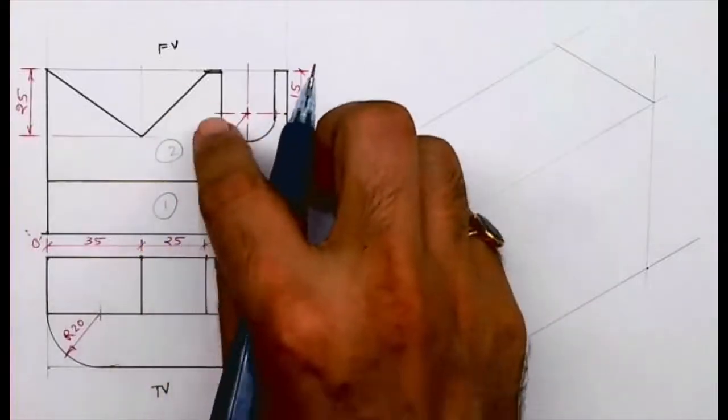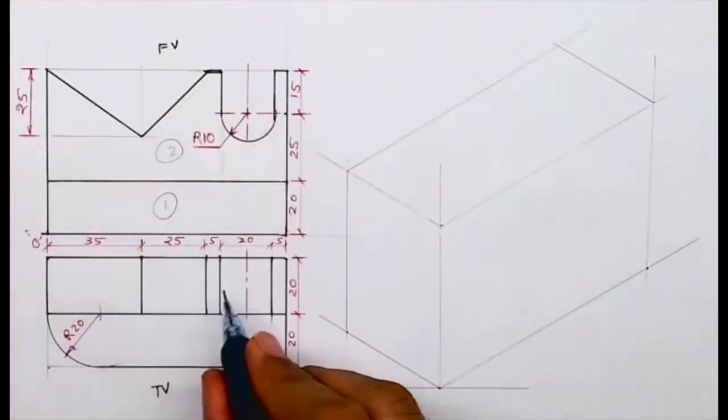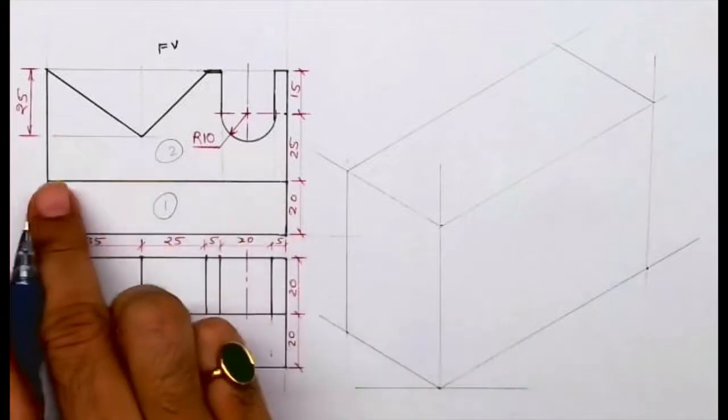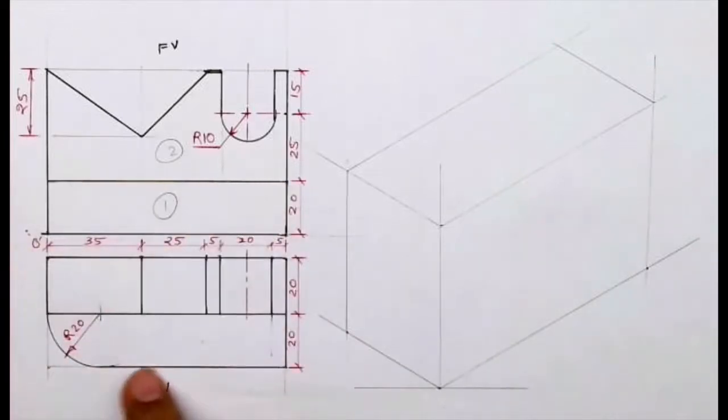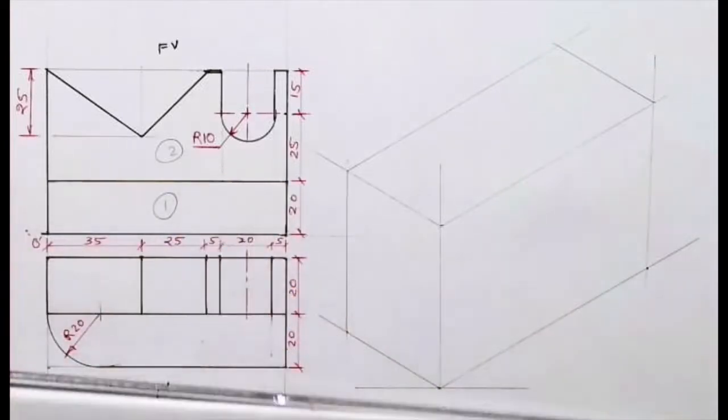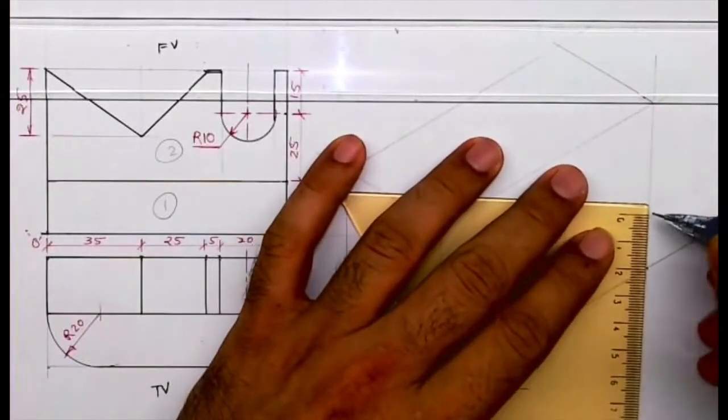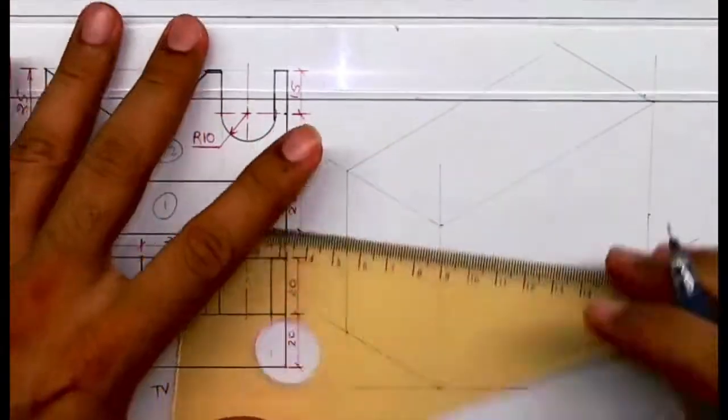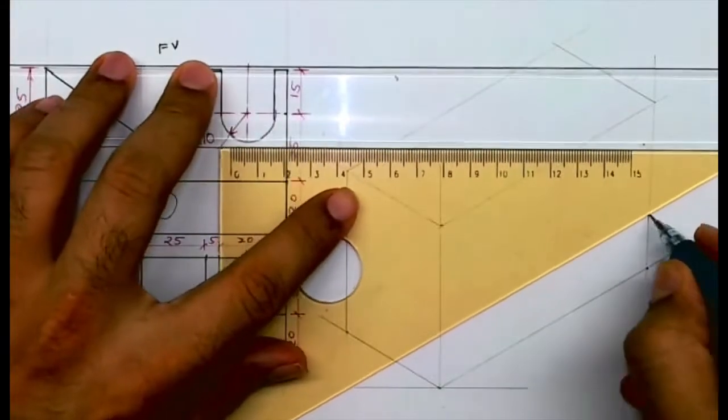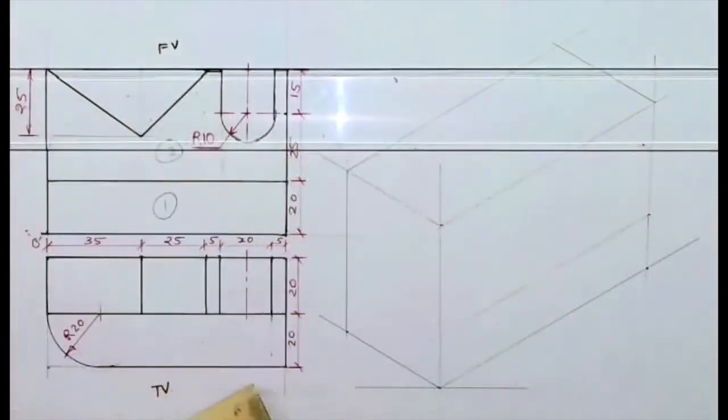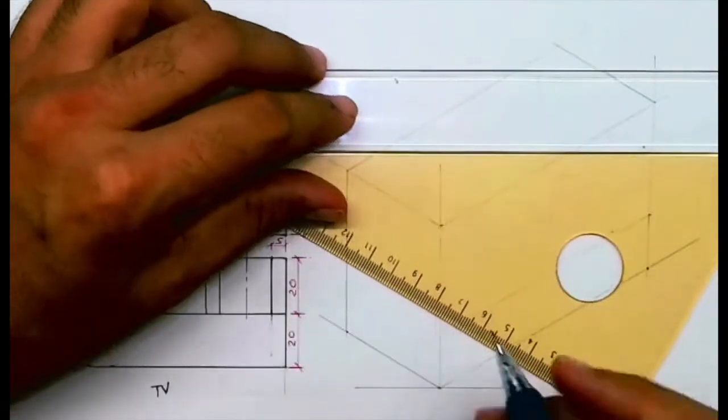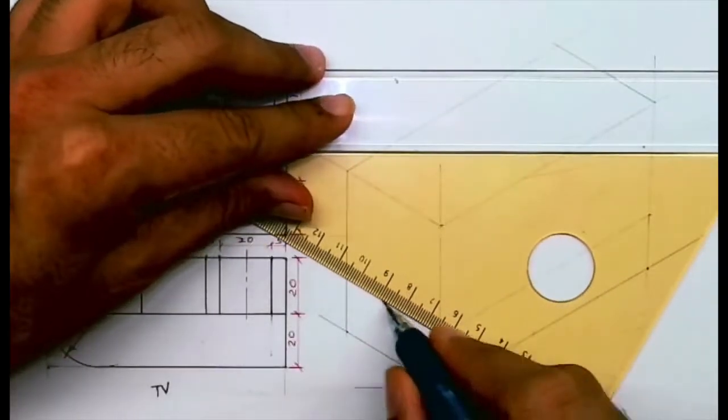We'll start with front view. Part one is nearer to us and is down, so we'll start with part one. I've given 20, so I will take 20, draw a line, and from here also I will draw a line.